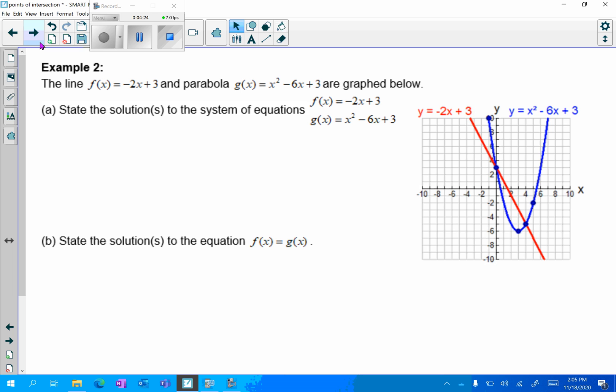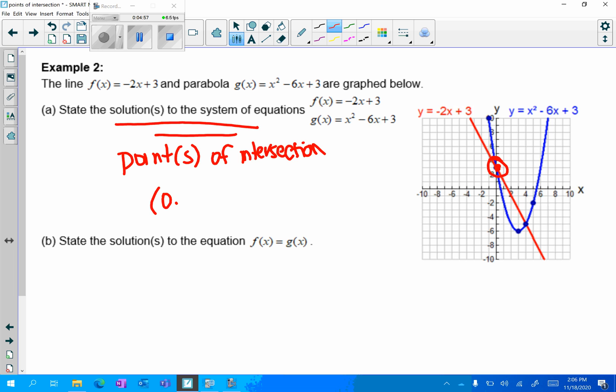The line f of x equals negative 2x plus 3 and the parabola g of x equals x squared minus 6x plus 3 are graphed below. Part a is to state the solution or solutions to the system of equations. So once again, this is my point or points of intersection. So that's this point here which is the point (0, 3) and this point over here which is the point (4, -5).